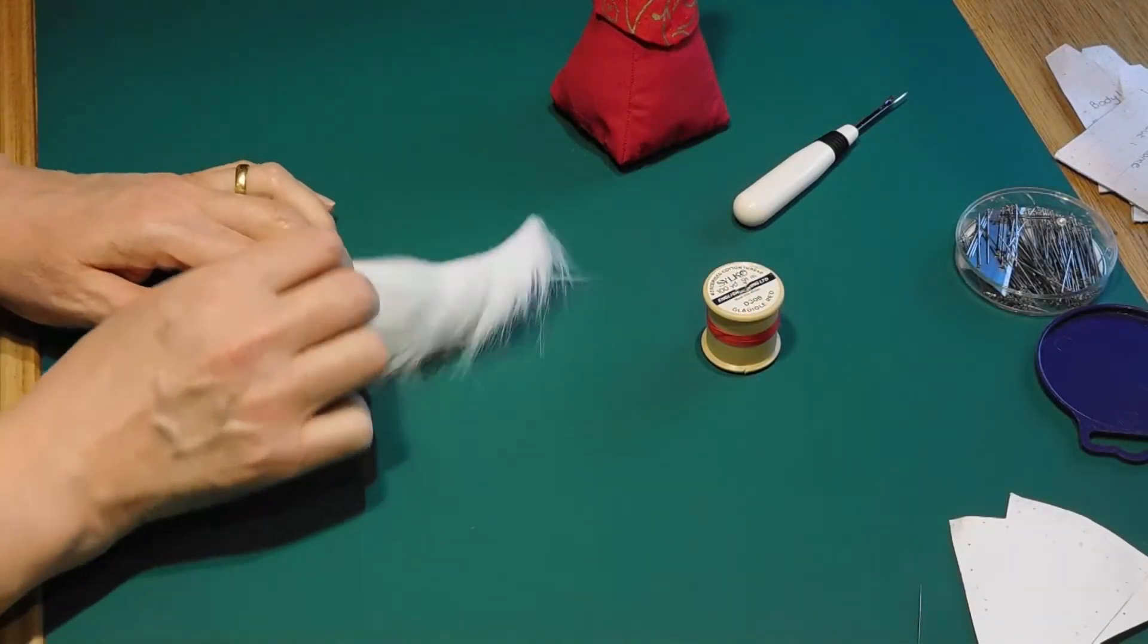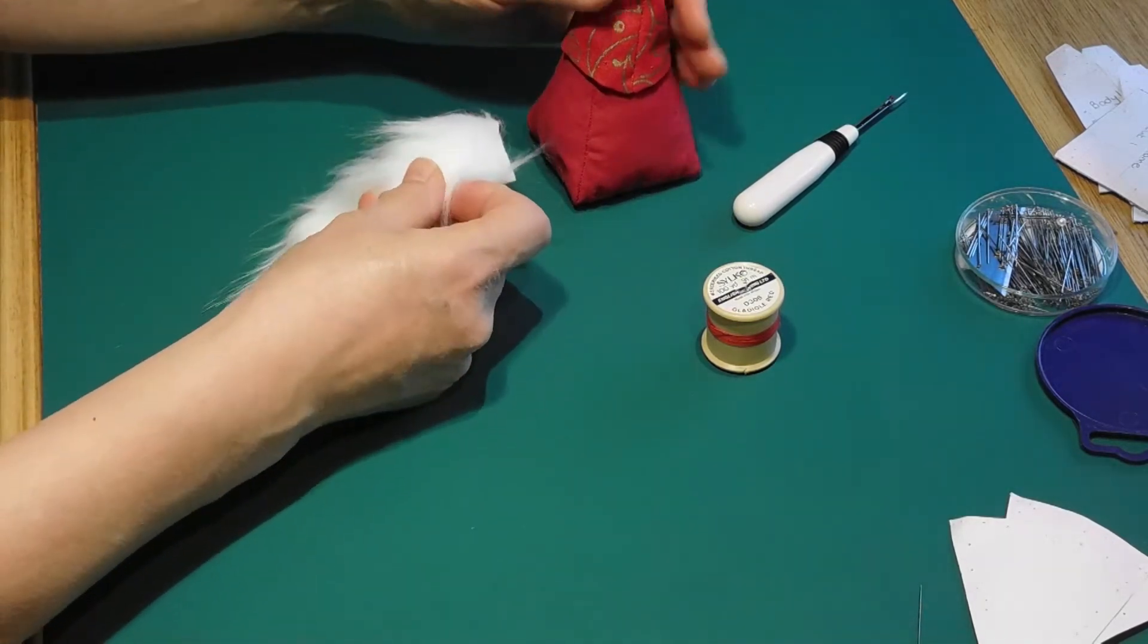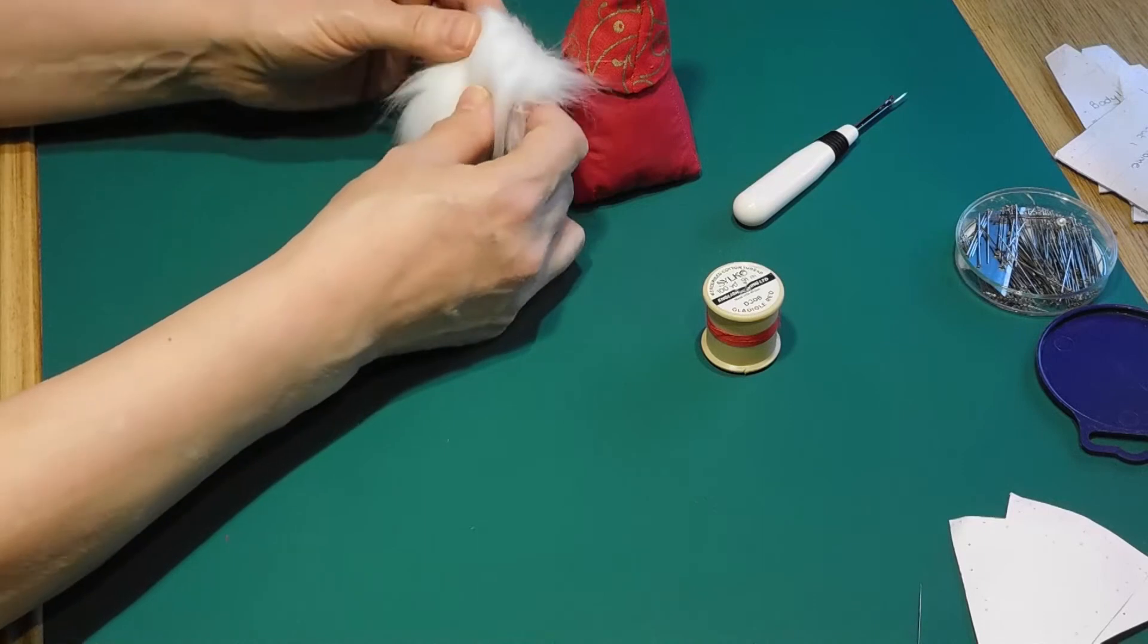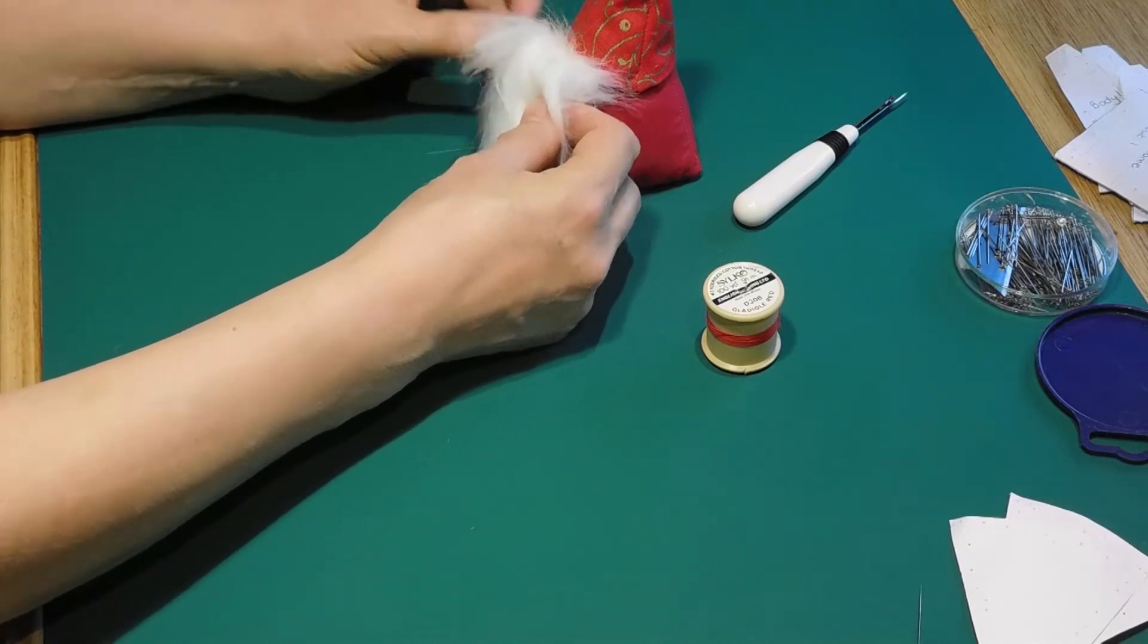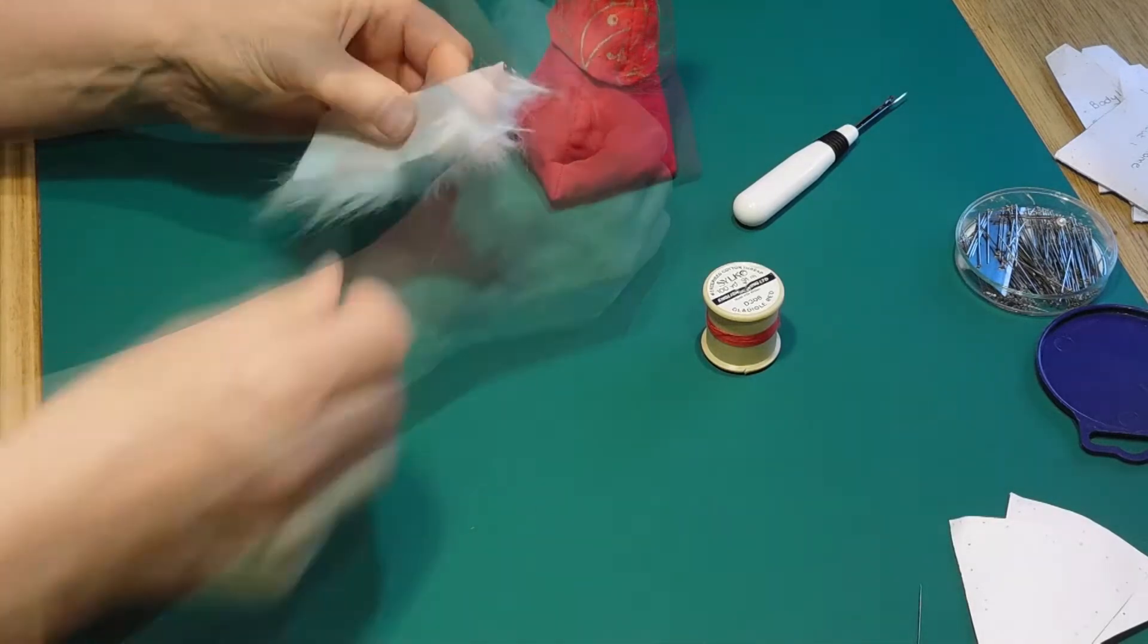Place the fur beard under the hat, resting it in the middle of the front body. This should help you to determine how long you want your gnome's beard to be. Cut the fur to the desired length.